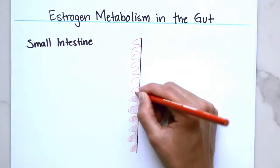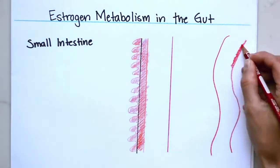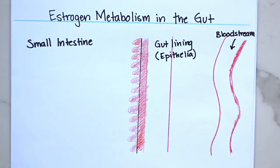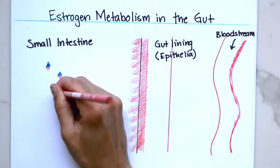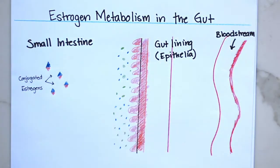Here is my diagram of the inside or the lumen of the small intestine, the lining of the gut known as the gut epithelia, and the blood vessel. After your hormones are metabolized in the liver, some of the conjugated estrogen is excreted into the bile and dumped into the small intestine.